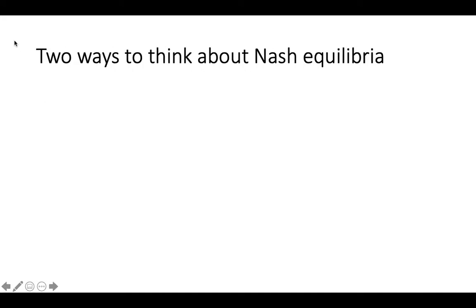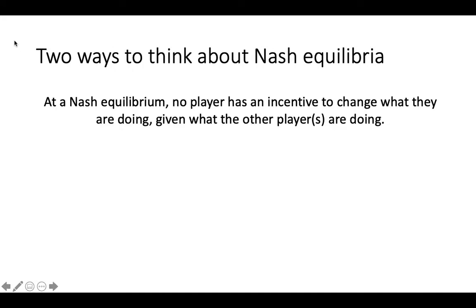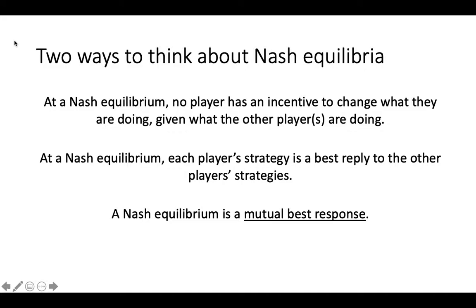There are two ways to think about Nash Equilibria. One way is that, at a Nash Equilibrium, no player has an incentive to change what they are doing, given what the other players are doing. A second way is that, at a Nash Equilibrium, each player's strategy is a best reply to the other players' strategies. Sometimes, to reflect this property, we say that a Nash Equilibrium is a mutual best response.